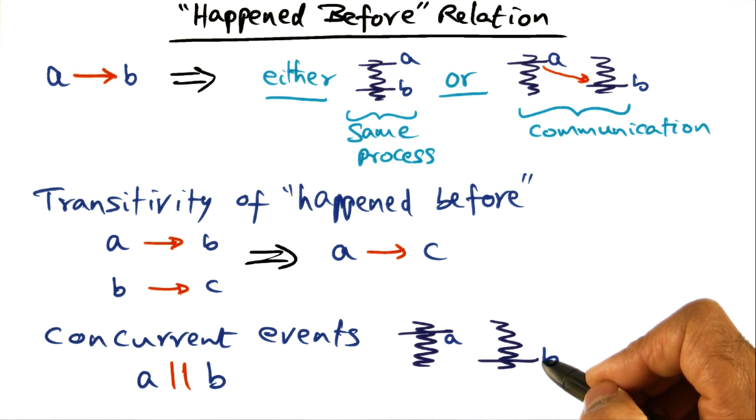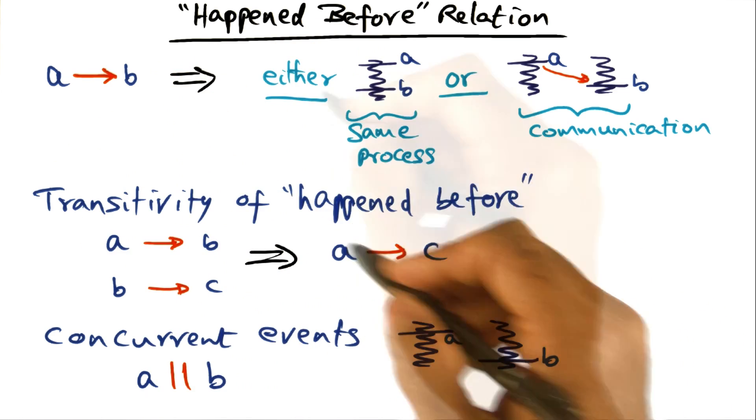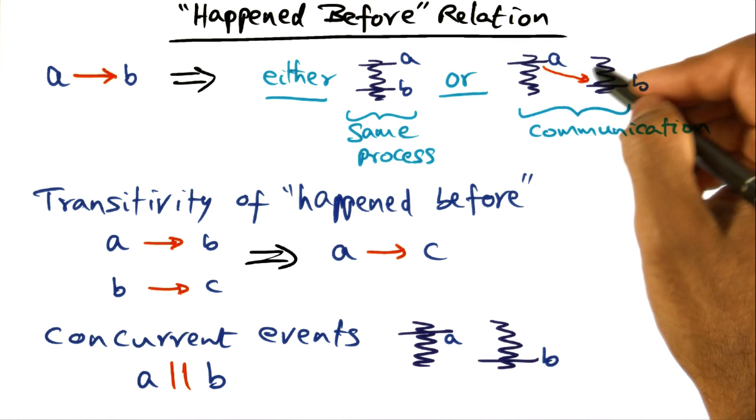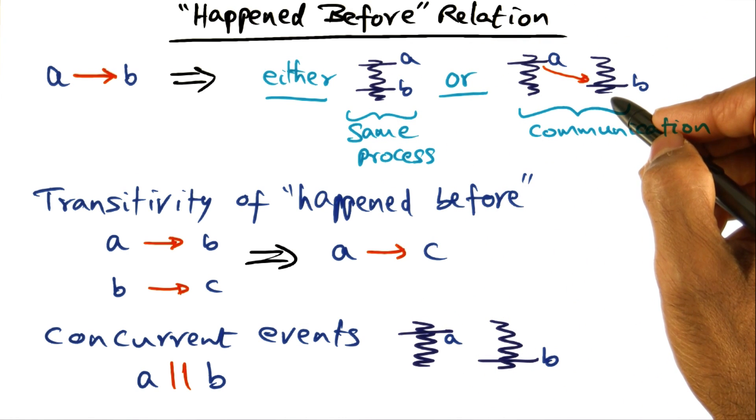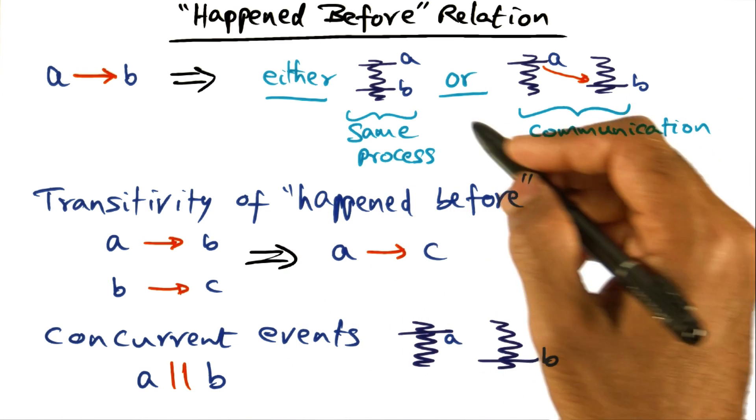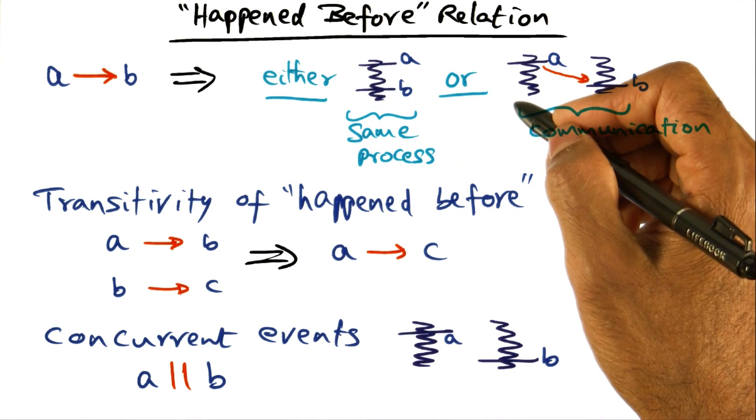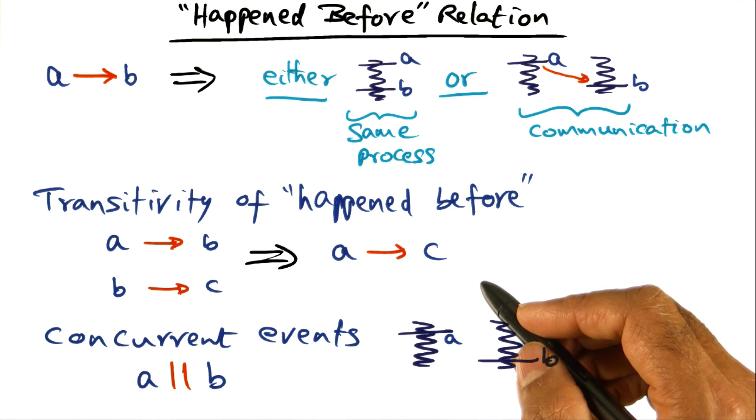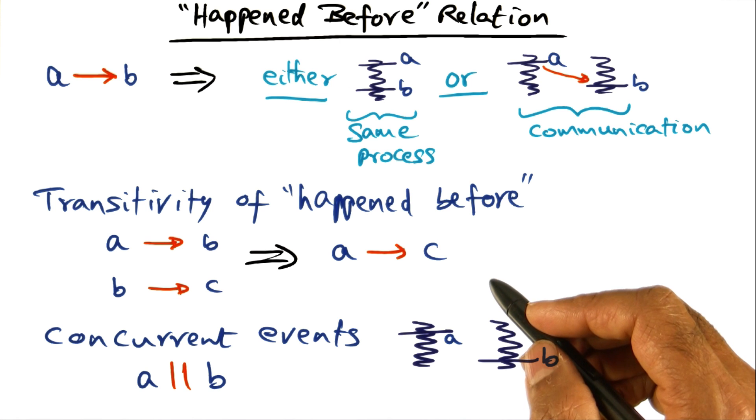So this is the fun thing about a distributed system, is that this happened before relationship, which looks at either events on the same process or events across processes connected by communication, and the transitivity of the happen before relationship through the native happen before relationships, gives at best a partial order for all the events that are happening in the system.